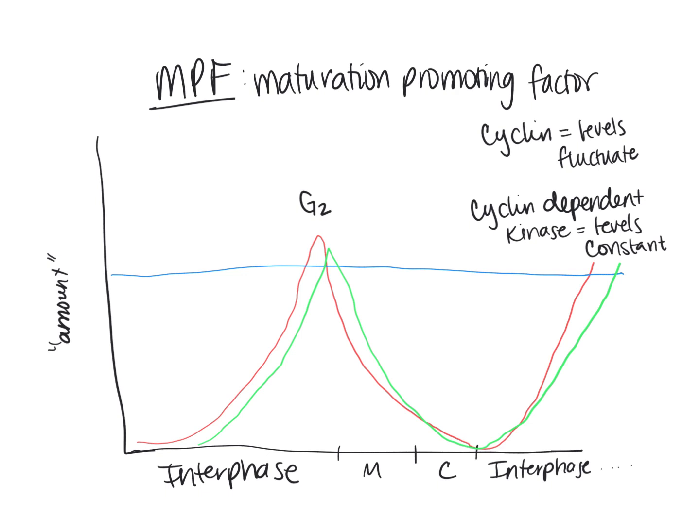You can think of this as the chemical trigger for mitosis for this particular cyclin and CDK. The MPF level reaches its maximum, and that is the trigger for the M phase. After that trigger, the cyclin is destroyed — which is why the levels continue to decrease.